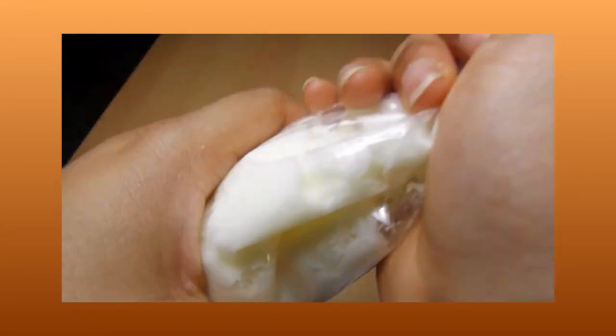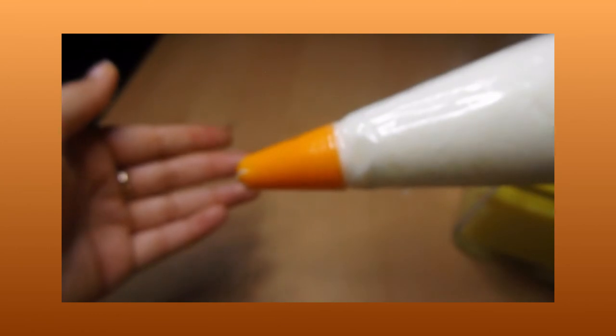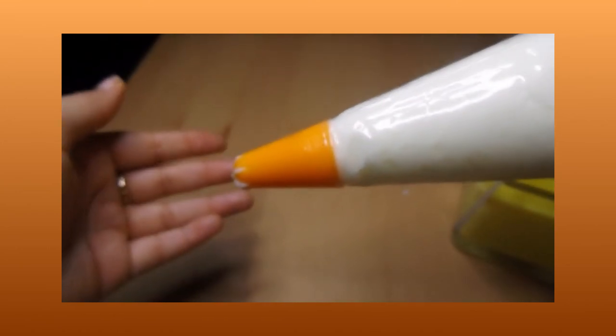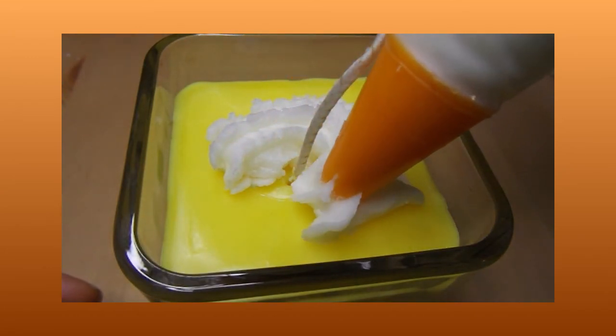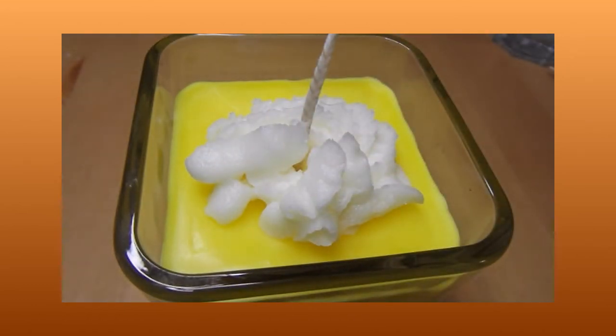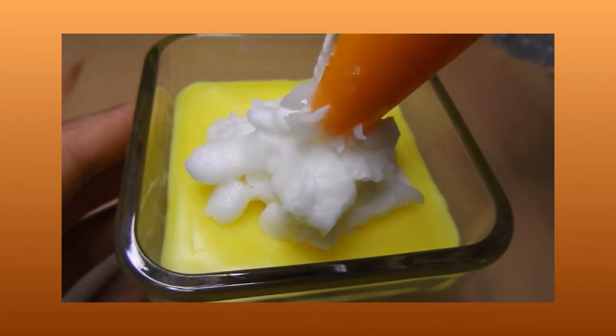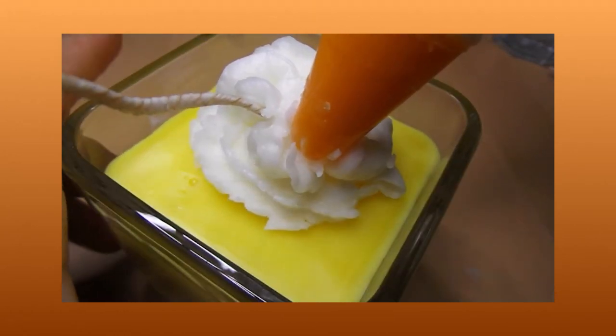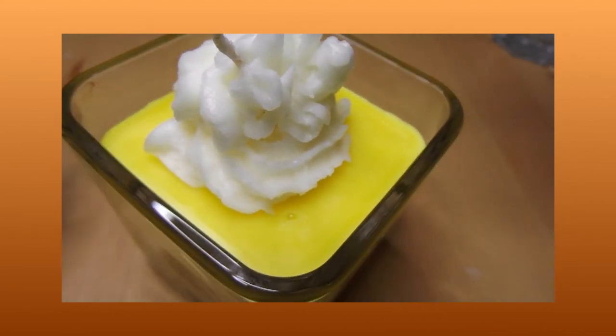Once you've got all your wax in the bag squeeze it as close to the tip as you can and now we're gonna start the really fun part. It seems harder than it looks but all you're gonna do is squeeze it out slowly into a circle around the wick. Make sure your wick stays in the middle. Now don't be afraid if you make a mistake, it actually looks a little better that way. More organic.